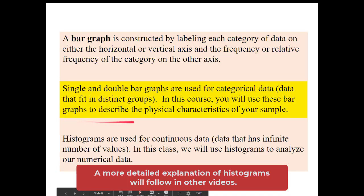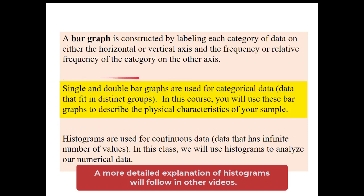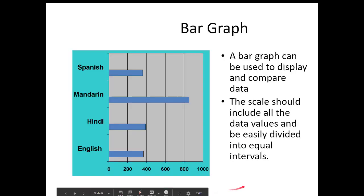We're going to talk about single and double bar graphs used for categorical data and data that fits distinct groups. This is important when we start to describe our samples. Single and double bar graphs and pie charts describe categories — they are used to describe the physical characteristics of your sample. The purpose of describing physical characteristics is to give the reader evidence that our sample matches the characteristics of our population.